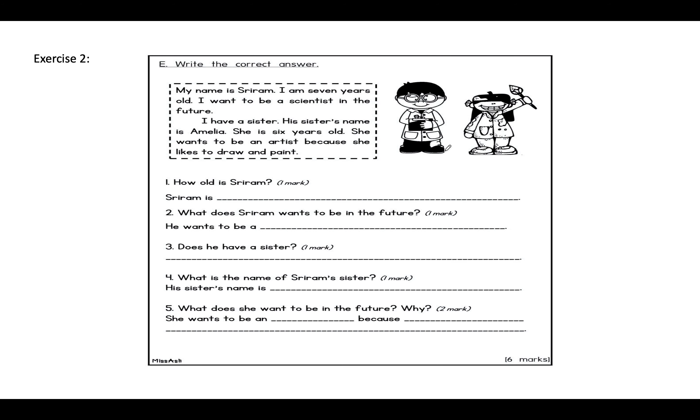Exercise two: Write the correct answer. 把正确的读了这里，然后回答这边下面的问题。My name is Sari Ram. I'm seven years old. I want to be a scientist in the future. I have a sister. His sister's name is Amelia. She is six years old. She wants to be an artist because she likes to draw and paint.